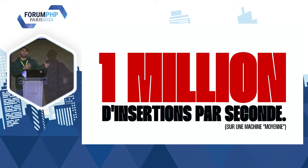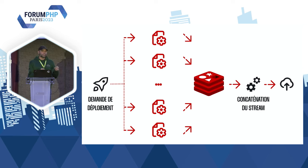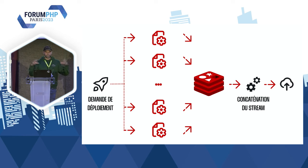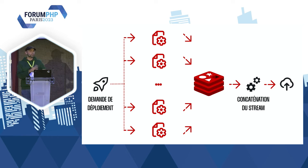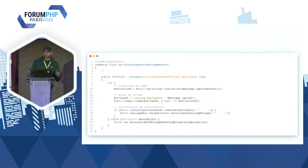Notre demande de déploiement pourrait maintenant ressembler à ceci : la demande dispatche des milliers de messages dans un pub/sub ou un RabbitMQ, ce qui déclenche autant de workers qui chacun génèrent des petites parties du JSON et envoient tout ça dans Redis comme point central. À la fin, un worker prend notre stream, concatène tout ça, et l'envoie dans le cloud. On va regarder un peu de code pour voir à quoi ça ressemble.